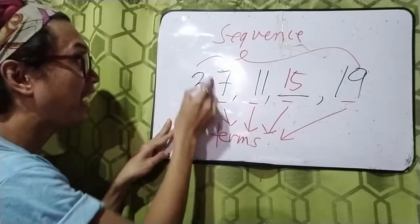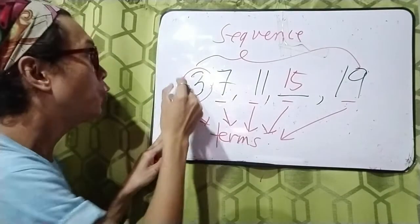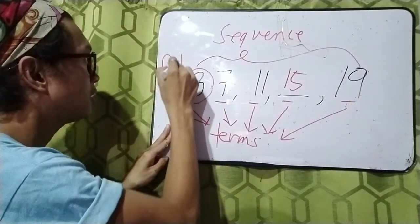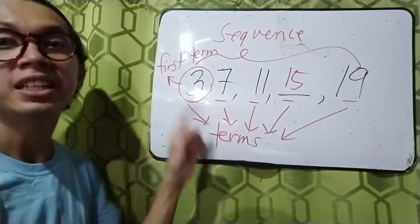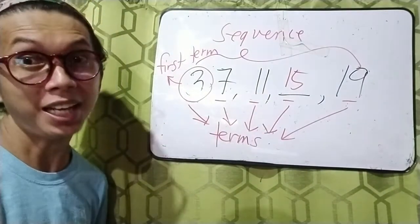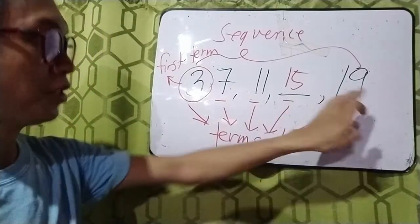So, the 3 here, since this is the first number in the sequence, we can call this the first term. Then 7 will be the second term, 11 will be the third, and how about 19? Yes, it is the fifth term.